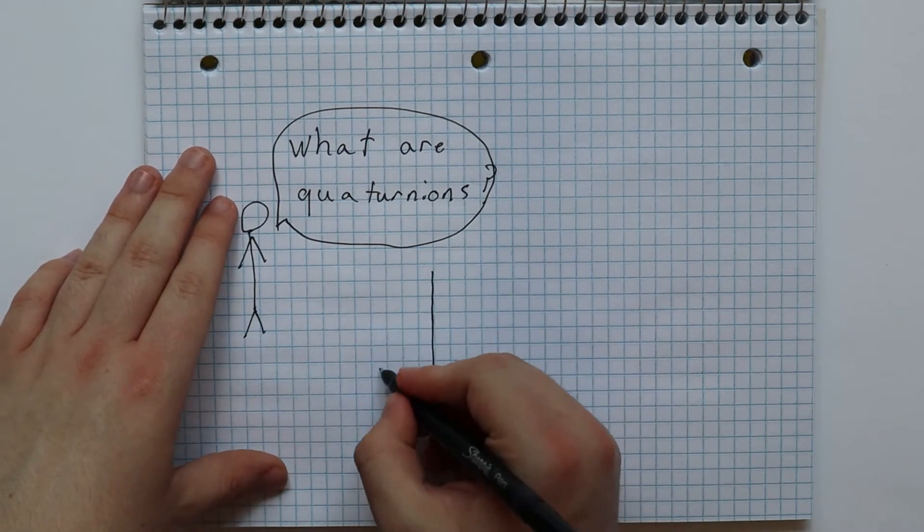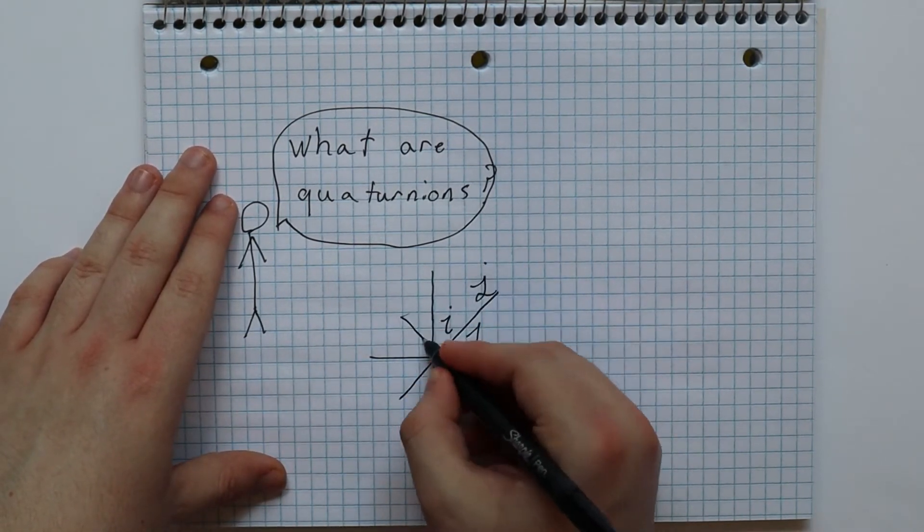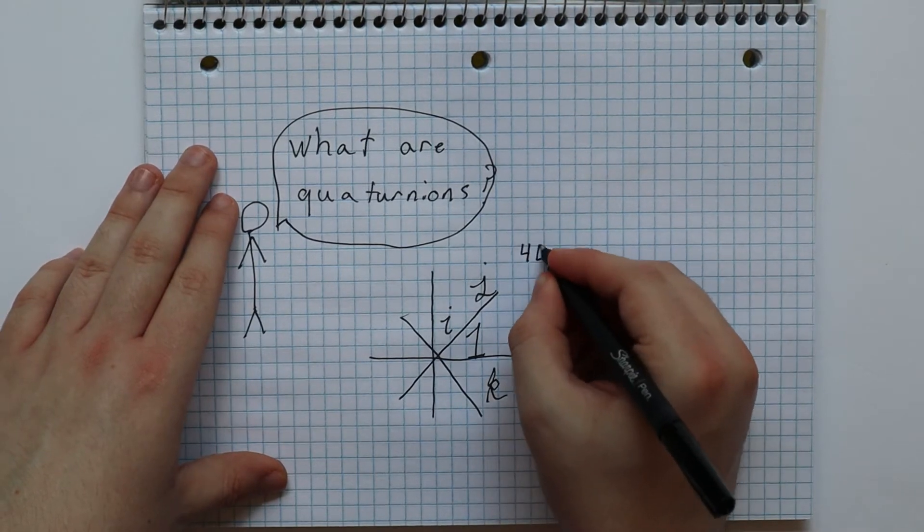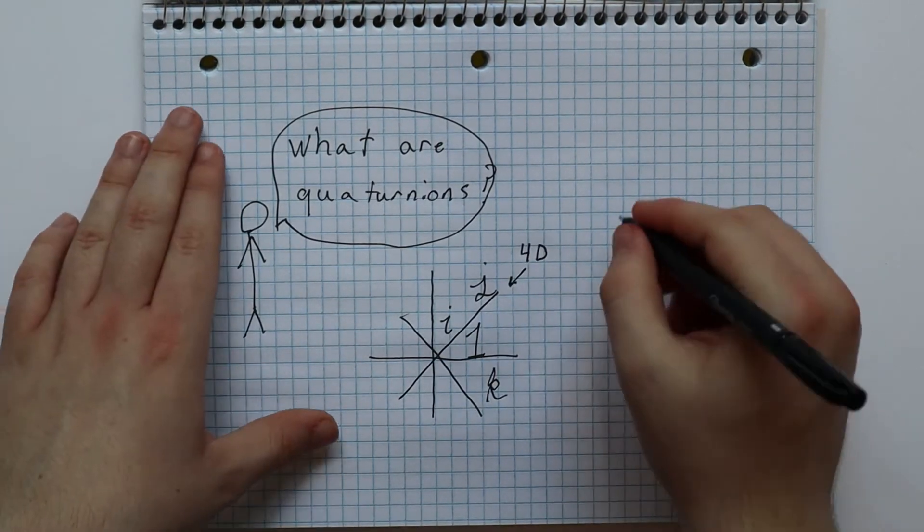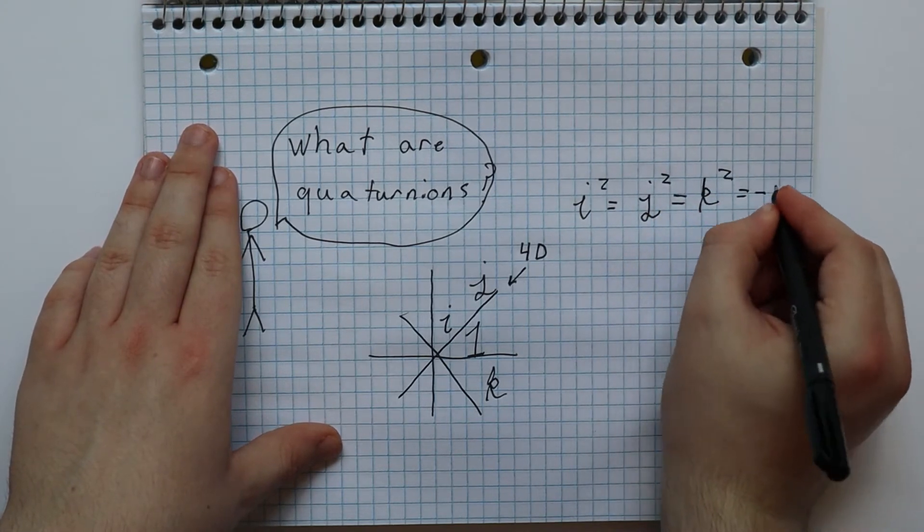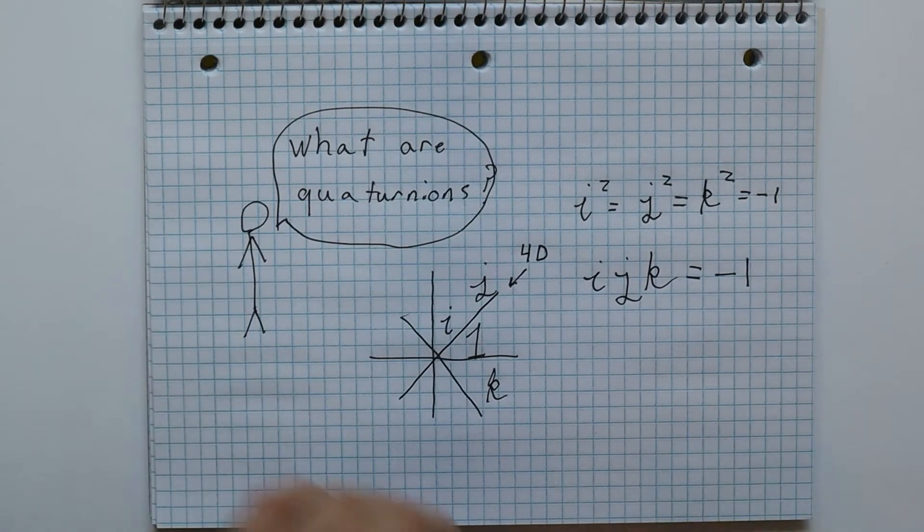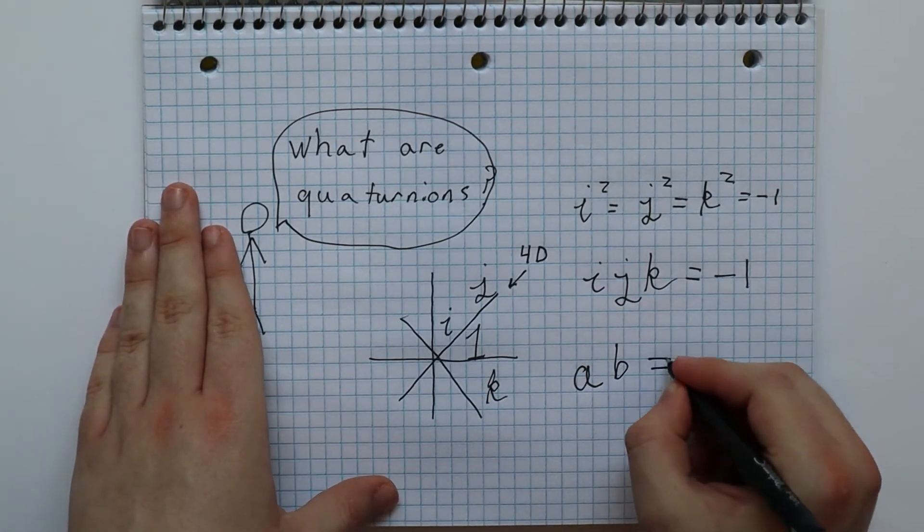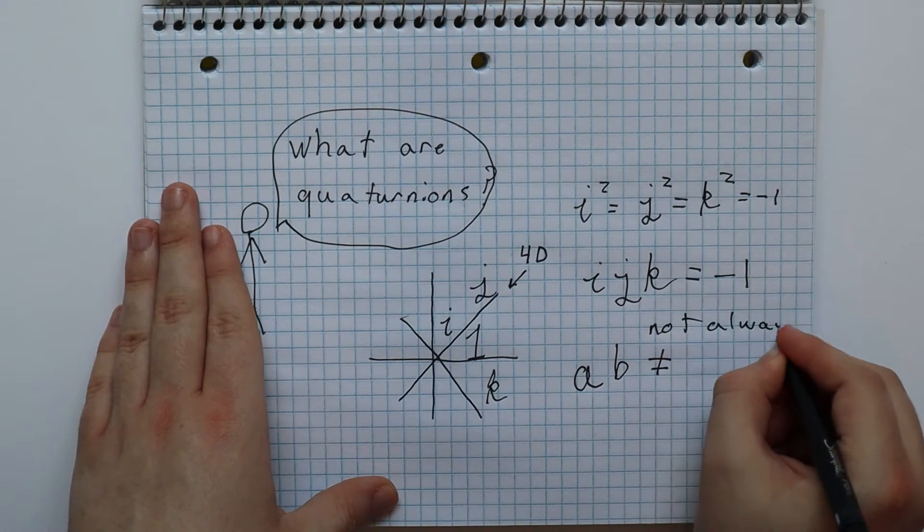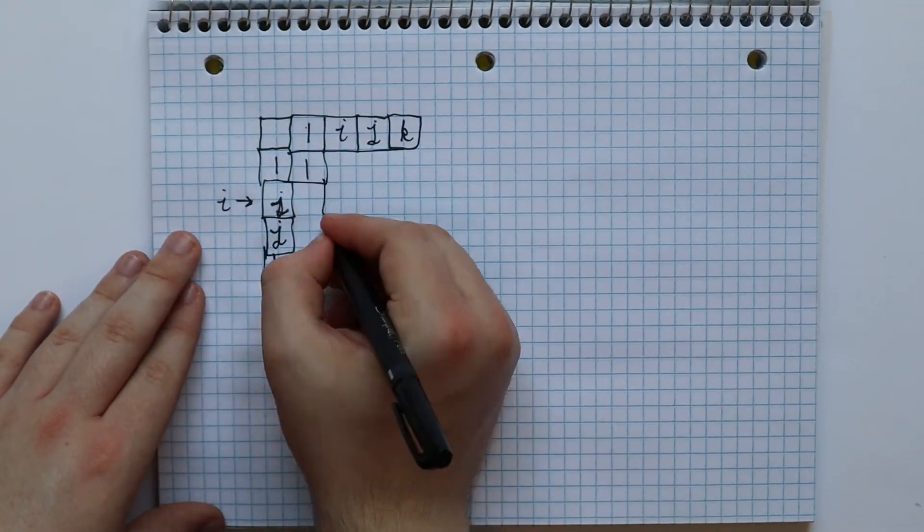Quaternions are just the extension to the complex numbers, introducing 4 more non-principle square roots of negative 1: j, negative j, k, and negative k. And all of the complex numbers are related by this equation: i times j times k equals negative 1. And their multiplication is non-commutative, meaning something like a times b is not always equal to b times a.